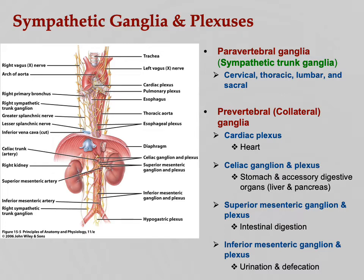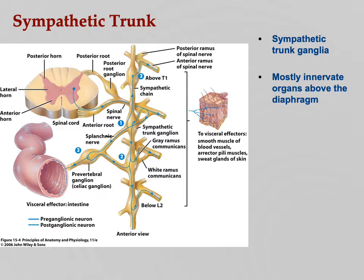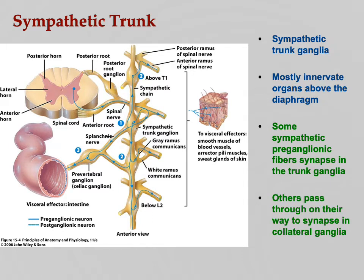You should be able to identify sympathetic ganglia — for example, if asked to pick out which is not a sympathetic ganglion. The sympathetic trunk mostly serves organs above the diaphragm: lungs, heart, and organs in the neck and head. Some pre-ganglionic fibers synapse in the trunk ganglion at that same level and then the post-ganglionic fiber goes out to the organ. Others simply pass through the trunk ganglion without synapsing there.